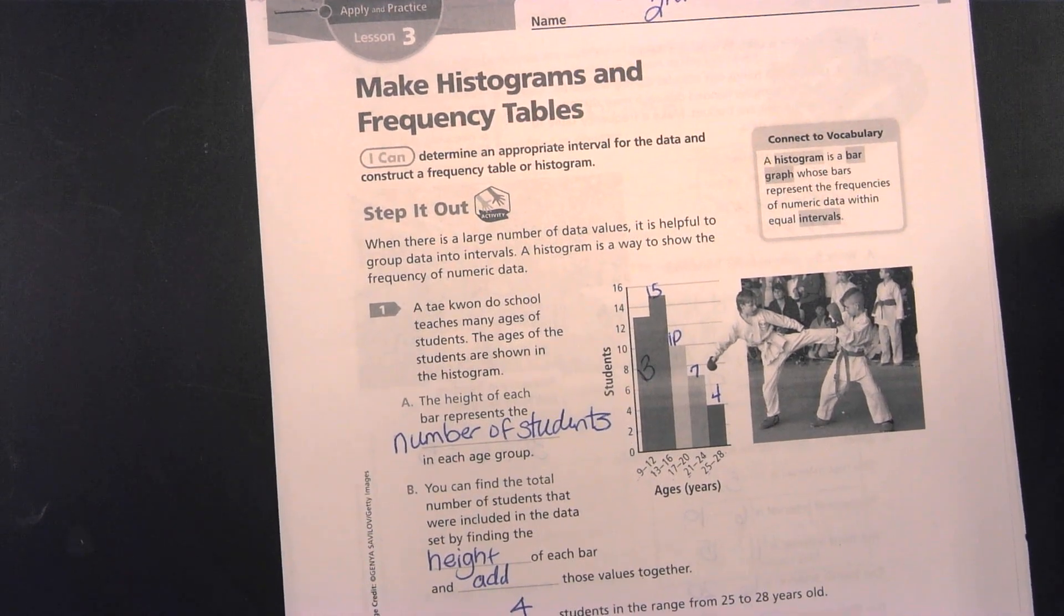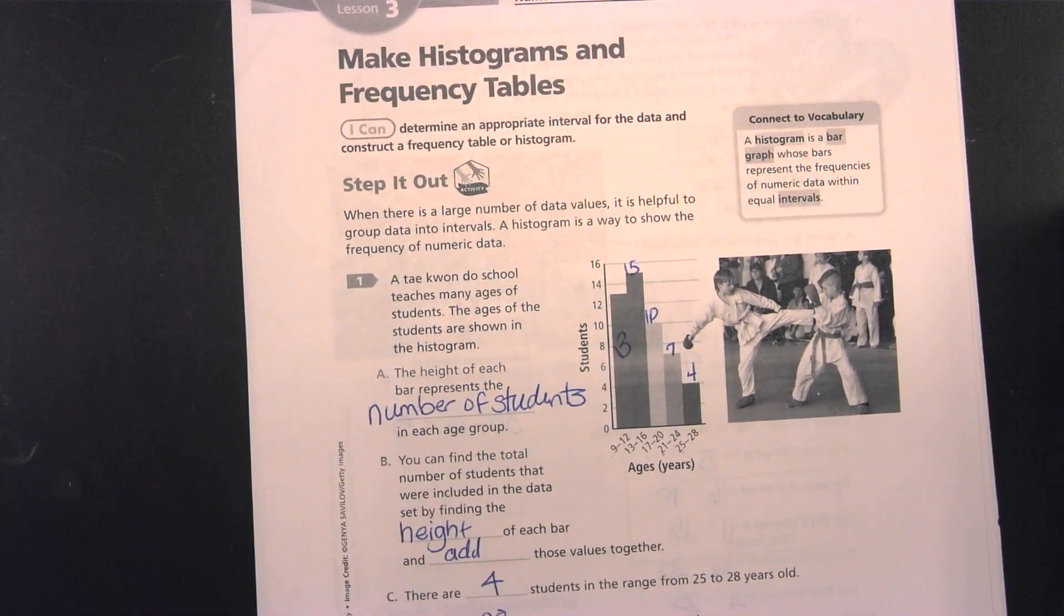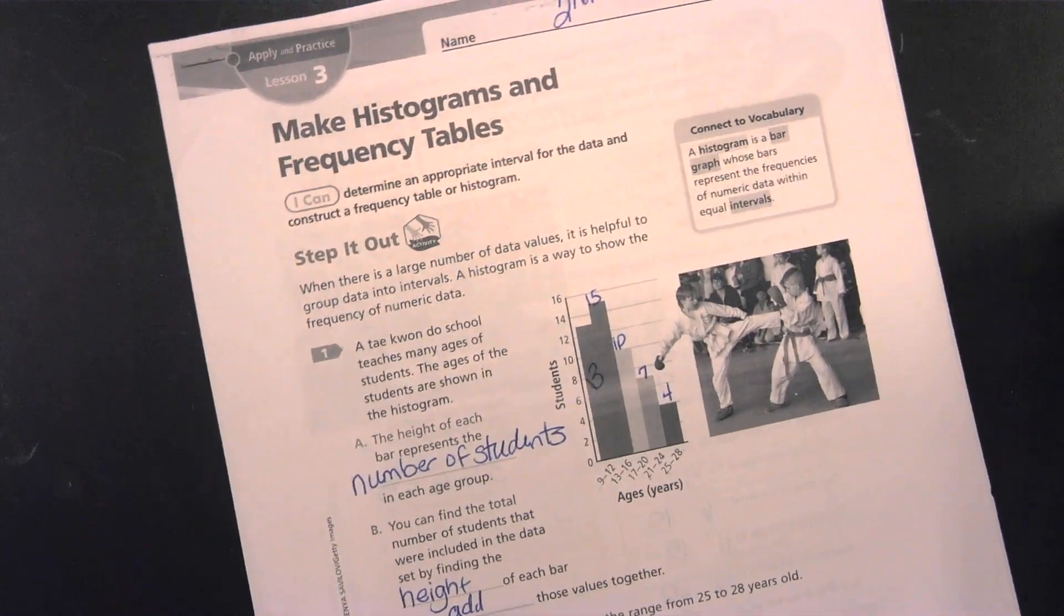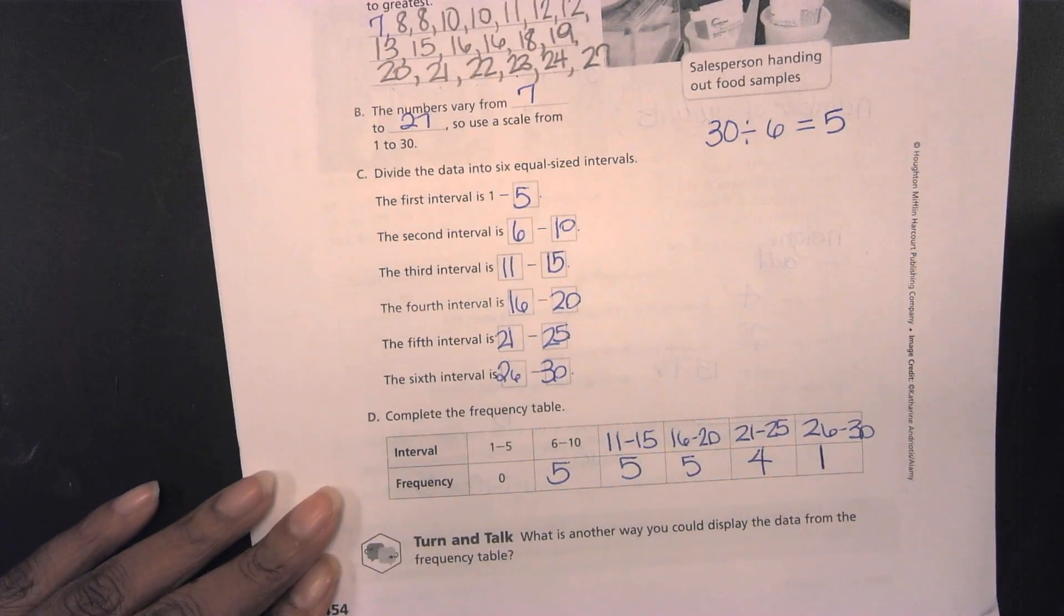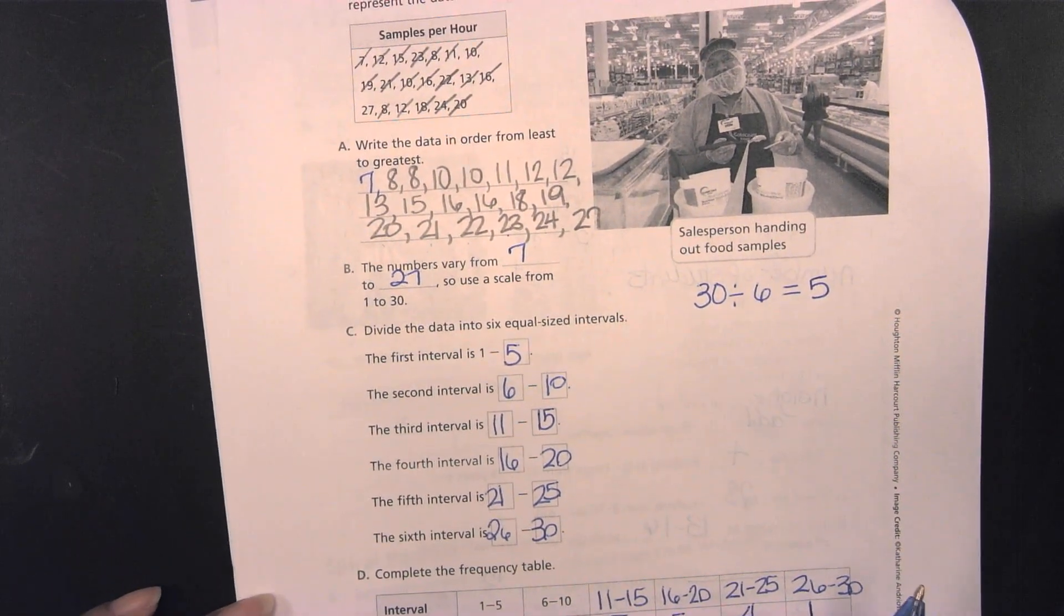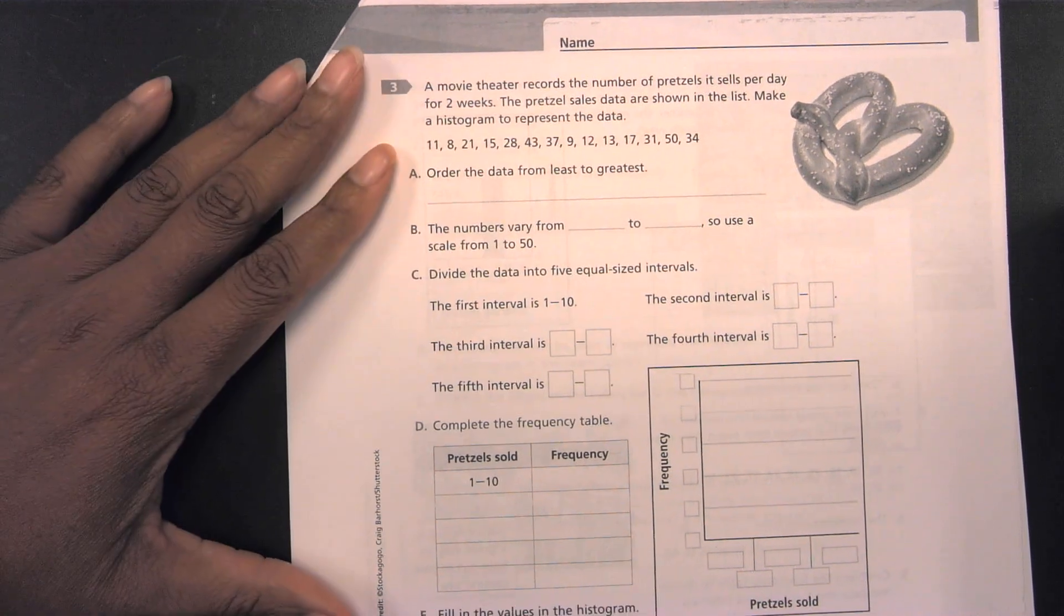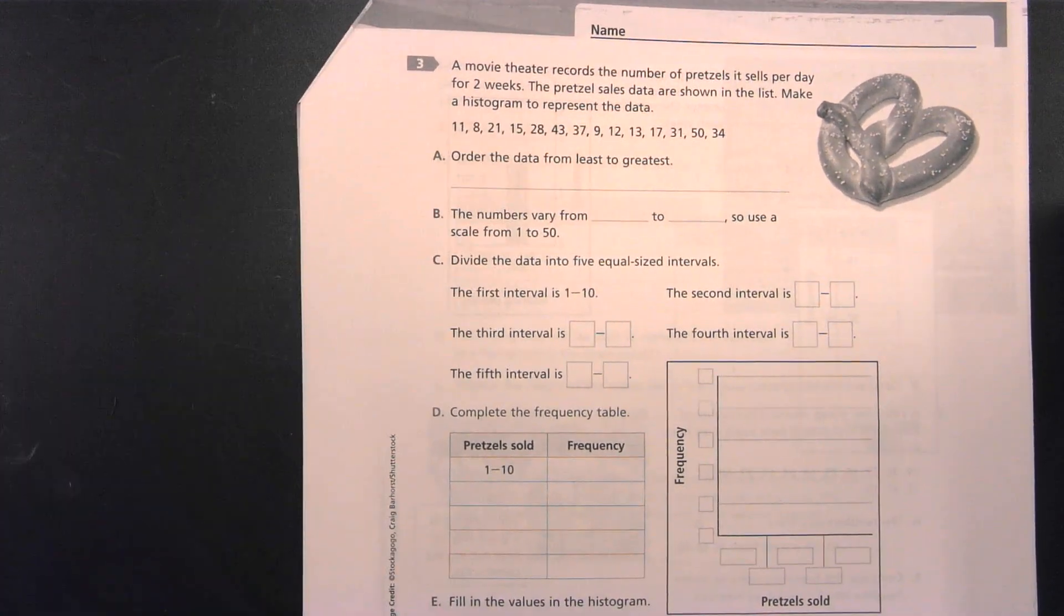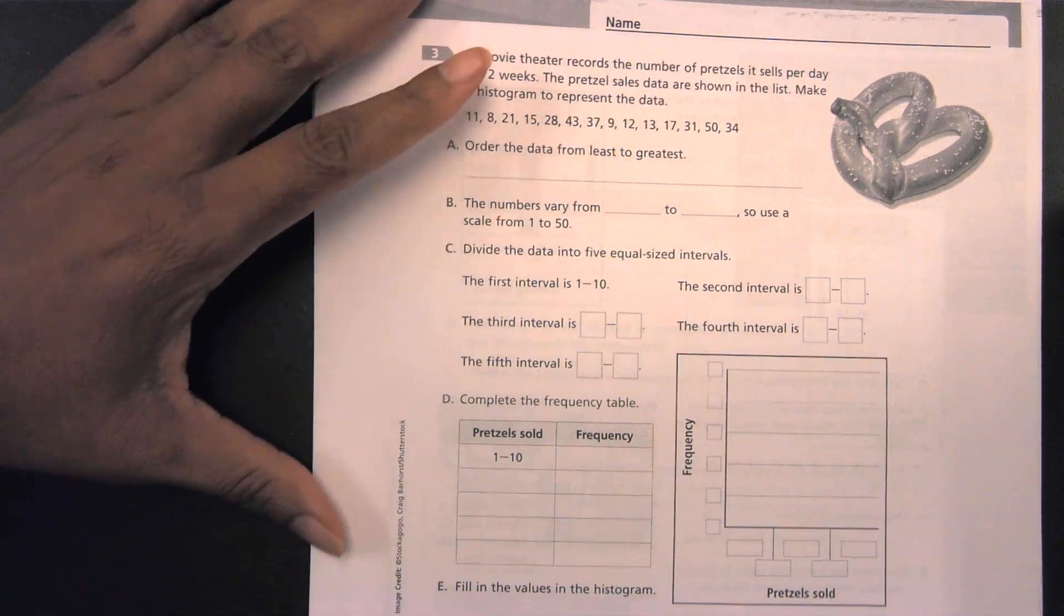The first example was us just basically reading data and answering the questions about it. The second question, we had to make a frequency table, which we did in D here. We kind of just went through the steps, and we made the frequency table. Now, today, we're going to make a frequency table as well as create a histogram. So, let's talk about number three.